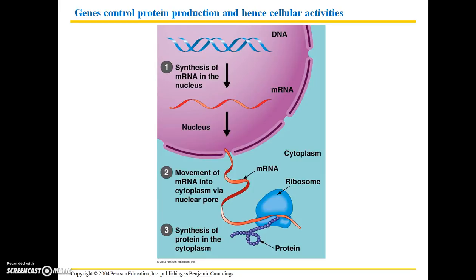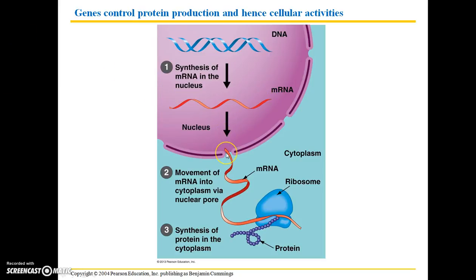Genes ultimately control protein production and hence cellular activities. All of a cell's DNA — the whole genome for that organism — is contained within the nucleus of every cell in the body; some of that DNA is not expressed depending on what type of cell it is. For genes that are expressed, there is synthesis of messenger RNA within the nucleus. That messenger RNA exits the nucleus via a pore in the nuclear envelope and moves into the cytoplasm, where proteins are made from mRNA strands within ribosomes.